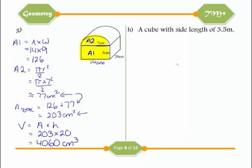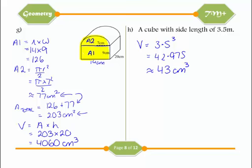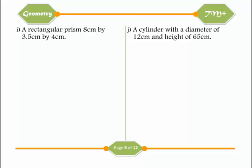A cube with side length 3.5: the volume is simply 3.5 cubed (cross-section is 3.5 squared, multiplied by 3.5 again), giving 42.975, which is approximately 43 centimetres cubed. Next, a rectangular prism 8 cm by 3.5 cm by 4 cm: just multiply length times width times height in any order — 8 times 3.5 times 4 gives 112 centimetres cubed.